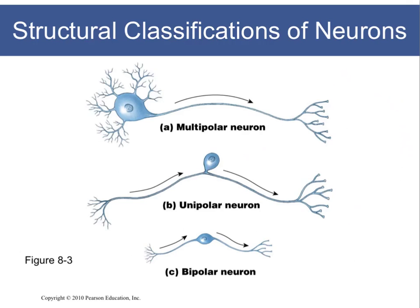The position of the cell body can change as well — we're not always going to have a cell body at one end of the neuron. Sometimes the cell body can be found in the center of the neuron, and we'll classify that neuron as unipolar — not because it doesn't have two ends, but because both the dendrites and the axons merge at one pole of that cell body. In the case of a bipolar neuron, we have the dendrites making contact on one pole of the cell body and the axon leaving the other pole.